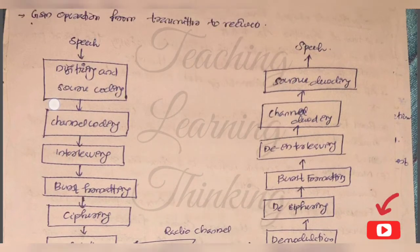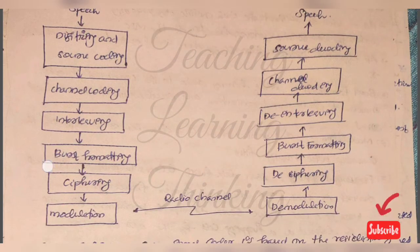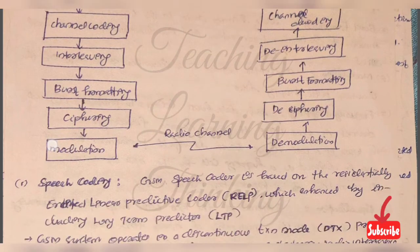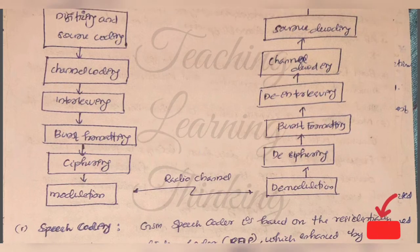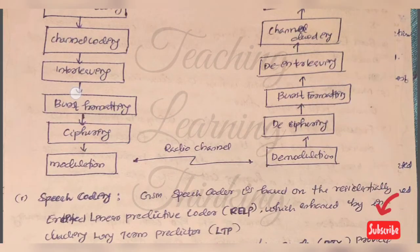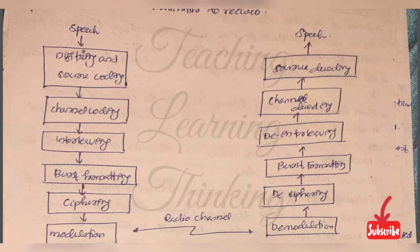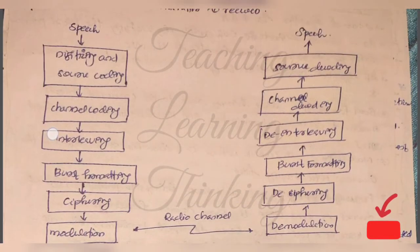We are going to discuss digitizing and source coding, then interleaving and burst formatting and ciphering, then modulation. Next to the receiver station, we are going to decode and decode and source coding and speech decode. The first one is speech channel and source coding. Speech coding is important for us.